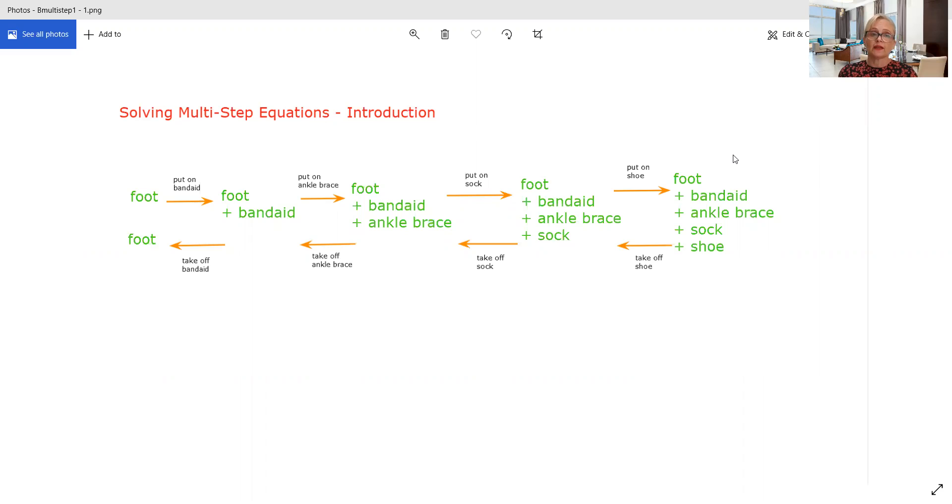We learned about the fact that addition and subtraction are inverse operations. So if you want to undo adding 2, you need to subtract 2 from both sides. If you need to undo subtracting 3, you need to add 3 to both sides.